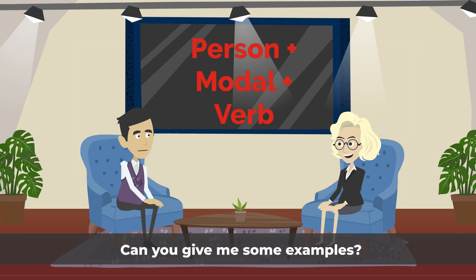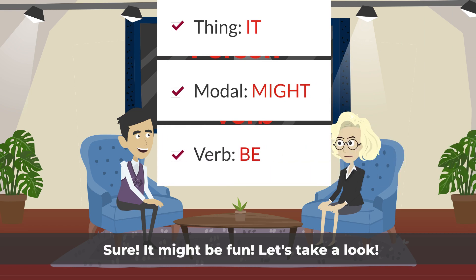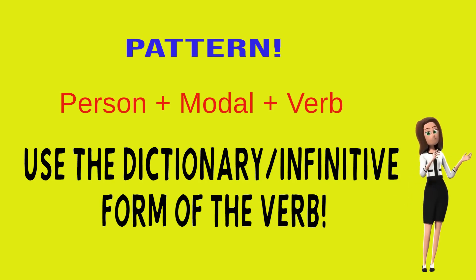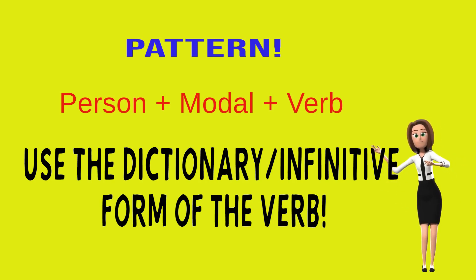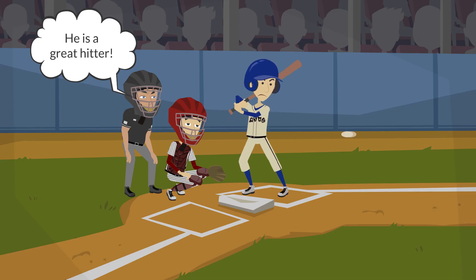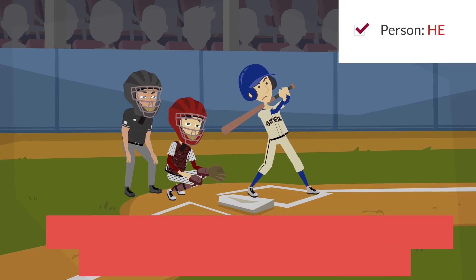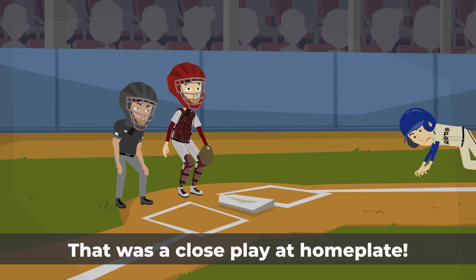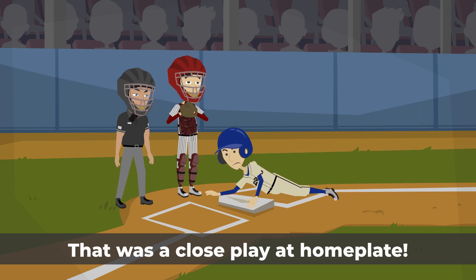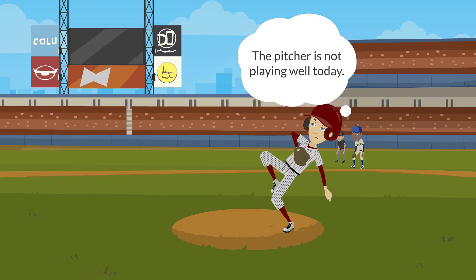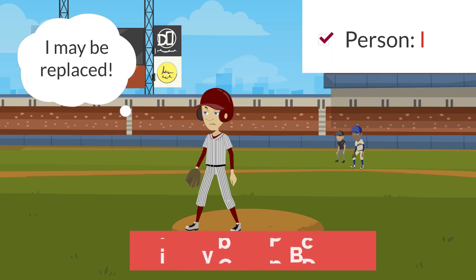Can you give me some examples? Sure, it might be fun. Let's take a look. Remember that our pattern is person plus modal plus verb. Use the dictionary, or infinitive form of the verb. He is a great hitter. He could be a professional baseball player. That was a close play at home plate. He might be out. The pitcher is not playing well today. I may be replaced.